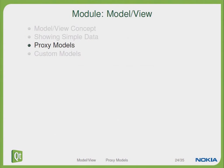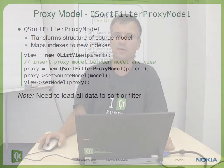Talking about proxy models, a convenience class for using proxy models is QSortFilterProxyModel, which gives you the chance of sorting and filtering the data from your underlying model. This means it transforms the data structure of a source model into a sorted or filtered proxy model.